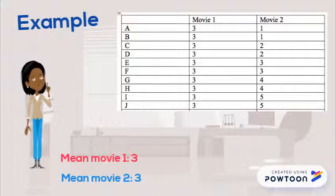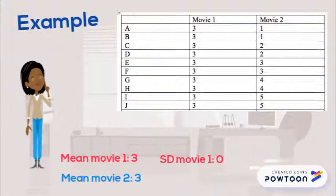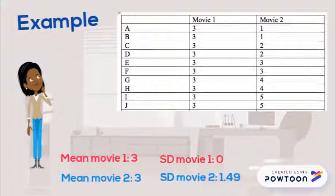But when we look at the standard deviation, we see that movie 2 had more variability in its scores. Movie 1 had a standard deviation of 0 because none of the ratings deviated from the mean. Movie 2 has a standard deviation of 1.49, which shows that the responses are more varied and on average 1.49 away from the mean.